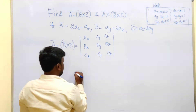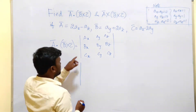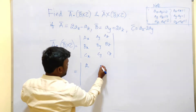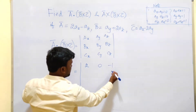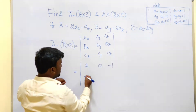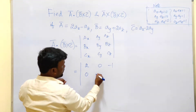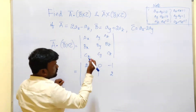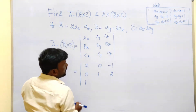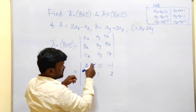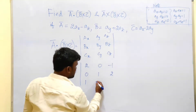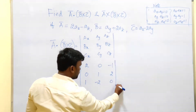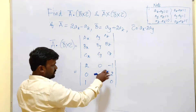Now substituting the given values: for a bar, ax = 2, ay = 0, az = −1. For b bar, bx = 0, by = 1, bz = 2. For c bar, cx = 1, cy = −2, cz = 0. These are the x, y, z components placed into the determinant.